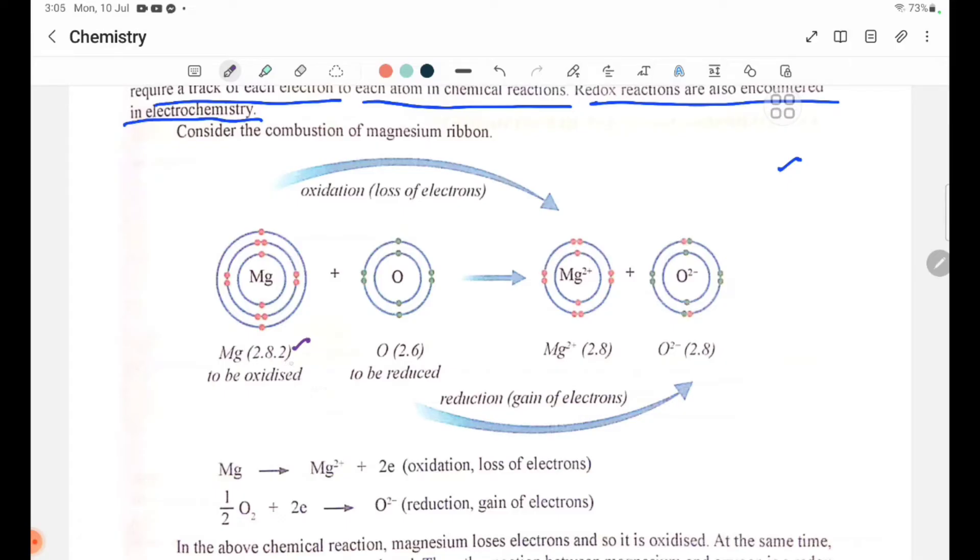Oxidation is the loss of electrons. Reduction is the gain of electrons.